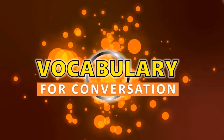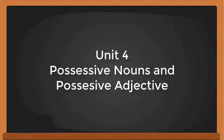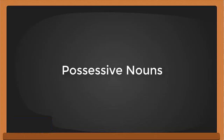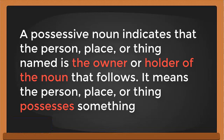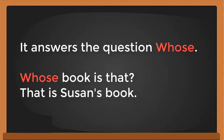Hello everybody, welcome to Vocabulary for Conversation. Let us continue our lesson with Unit 4: possessive nouns and possessive adjectives. A possessive noun indicates that the person, place, or thing named is the owner or holder of the noun that follows it — meaning the person, place, or thing possesses something.